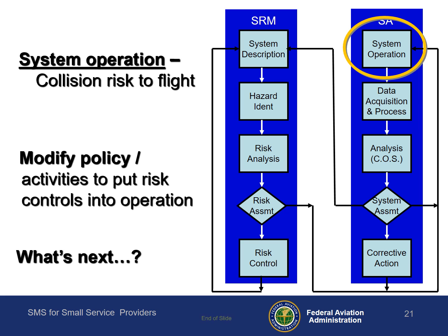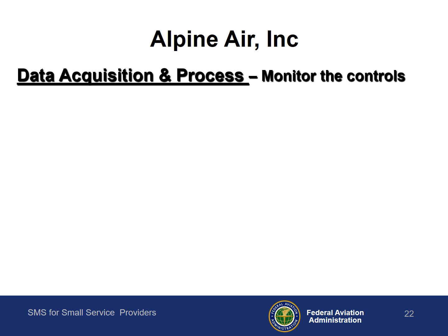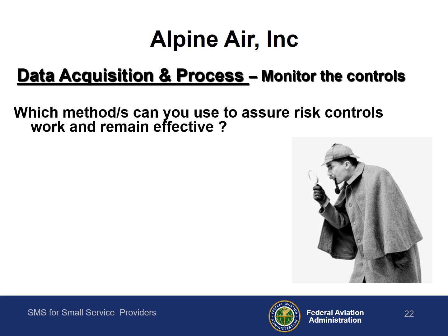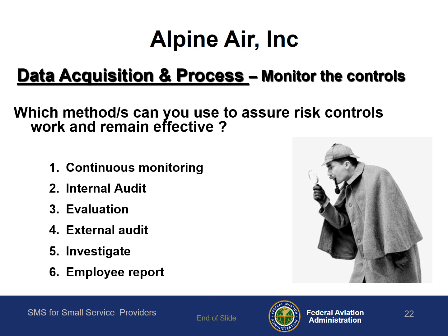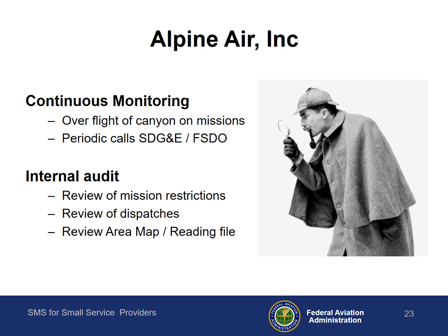What's next? The next step is to consider how you will assure your controls worked and continue to be effective. How do you do that? You have many options, so let's look at some of them. Your SMS will help you to consider which method might be most effective, and you can choose more than one. Using your background and experience, you decide that continuous monitoring — checking the status of the power line by overflying the canyon during good visibility missions and becoming a squeaky wheel at the power company — and internal audits fit your needs best.